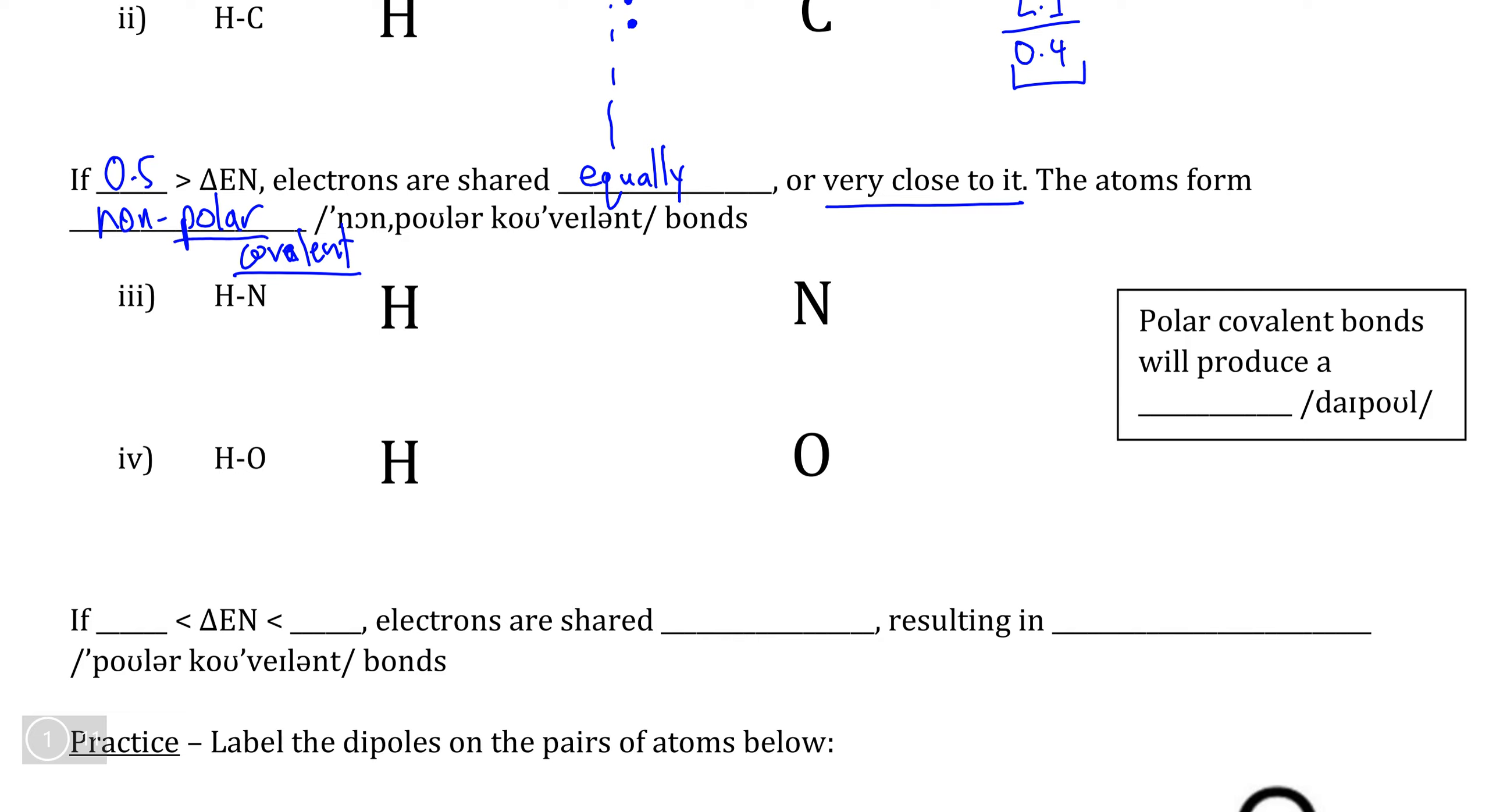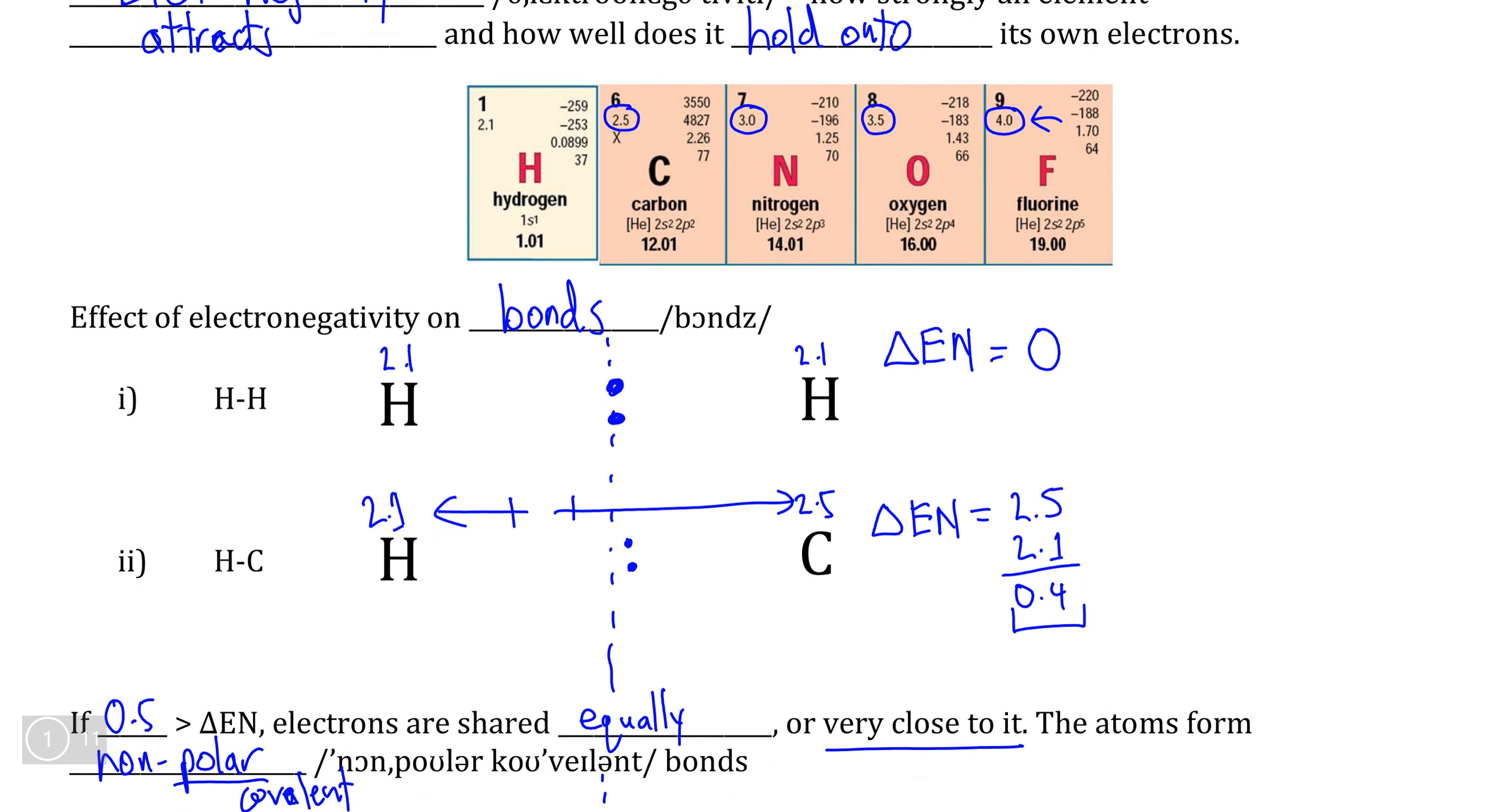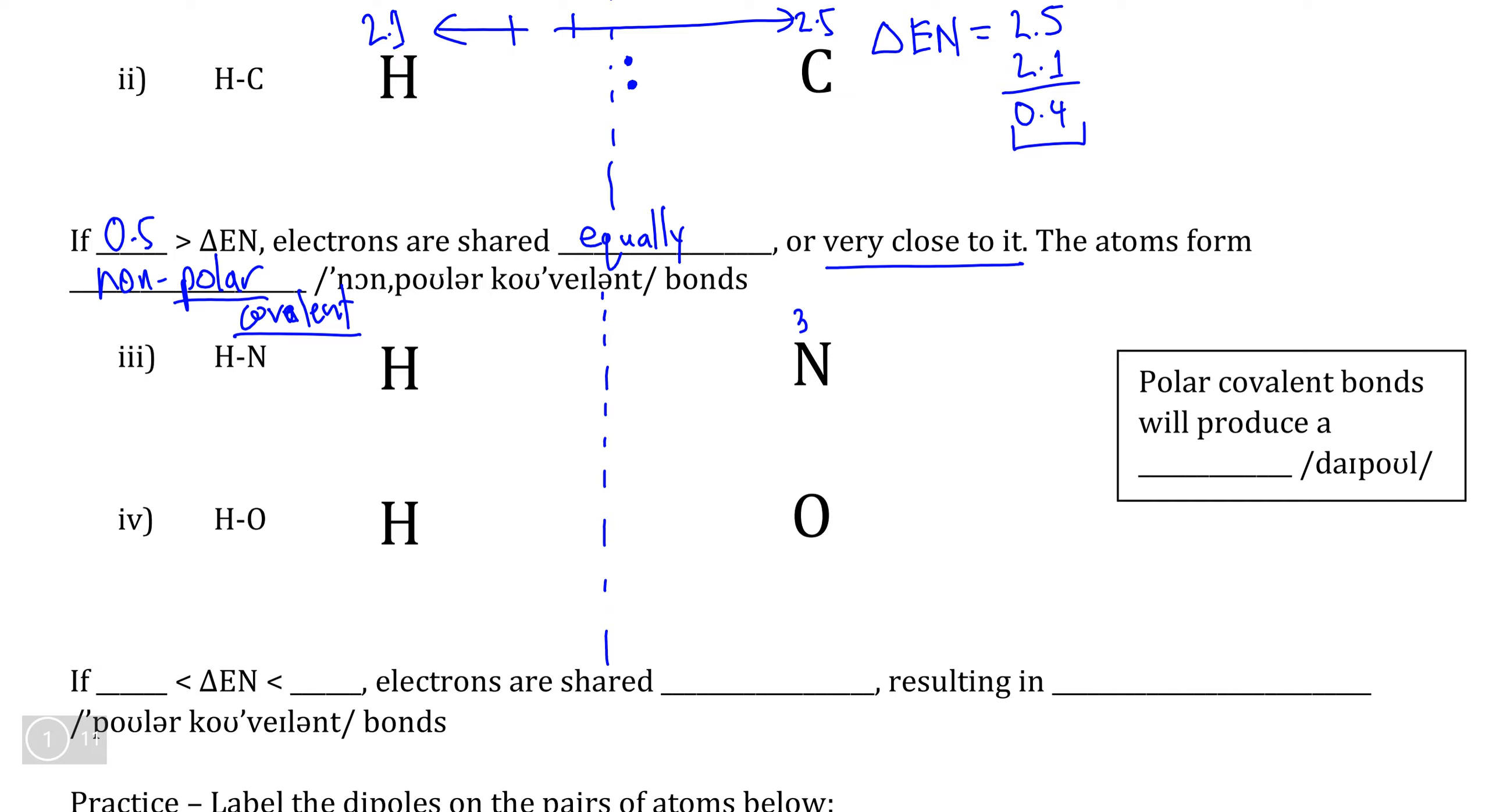So two examples of polar covalent bonds are the bonds that exist between hydrogen and nitrogen and hydrogen and oxygen. So let's draw the same dotted line indicating the halfway point between each pair of atoms and see what the difference is. So firstly, we'll need to check the electronegativity constants of nitrogen and oxygen, which we see are 3.0 and 3.5 respectively.